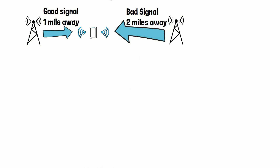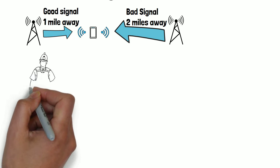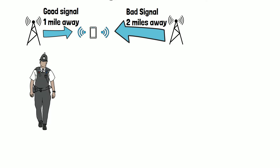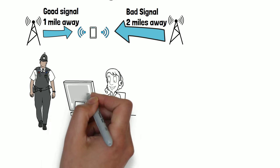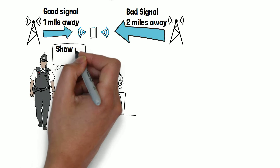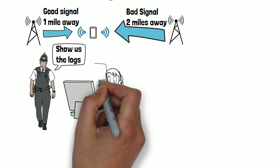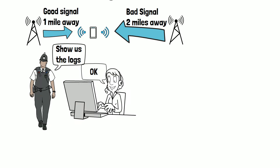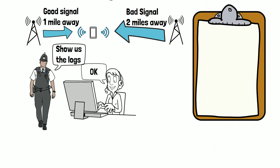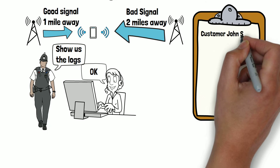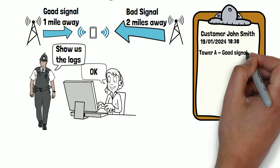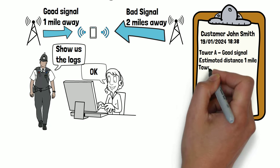Let's think back to a crime show scene and imagine the police want to get a suspect's phone location to track them down. The police will first approach the suspect's cell service provider with a warrant, requesting them to share the data they have on the suspect's device. The cell provider then checks their logs that show when a device with the number registered to the suspect communicated with cell towers, and which cell towers those were. The logs will also show the signal strength between the phone and the tower each time the phone communicated with the tower.